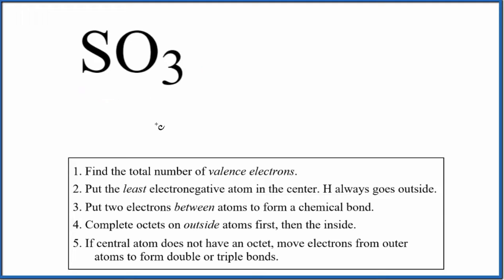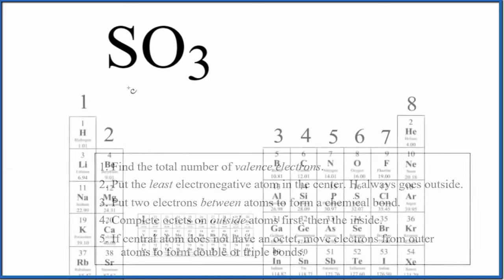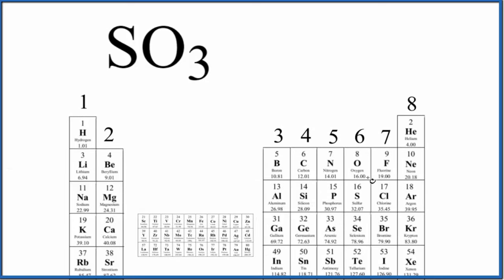The first thing we do with Lewis structure is we want to count the valence electrons up, and the periodic table can help us with that. So we find sulfur right here. This is in group 16, sometimes called 6A. We have six valence electrons for sulfur.